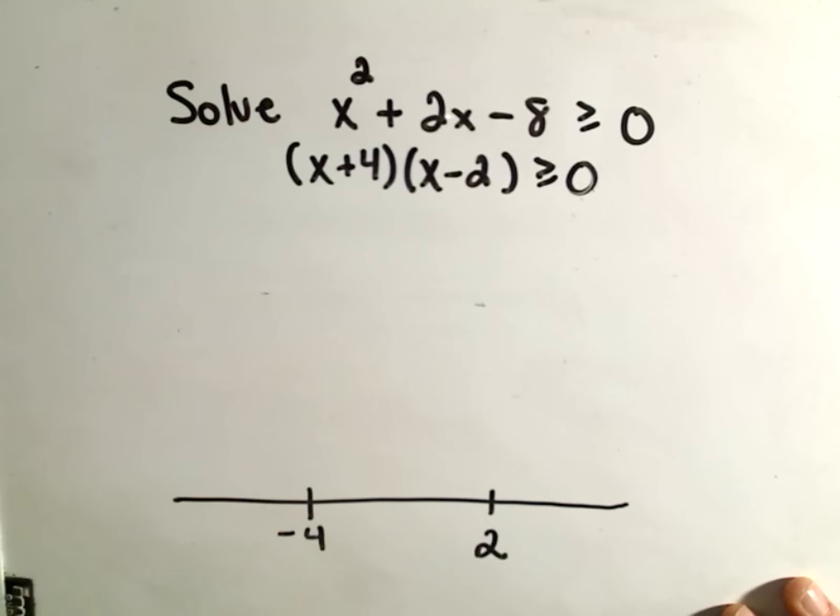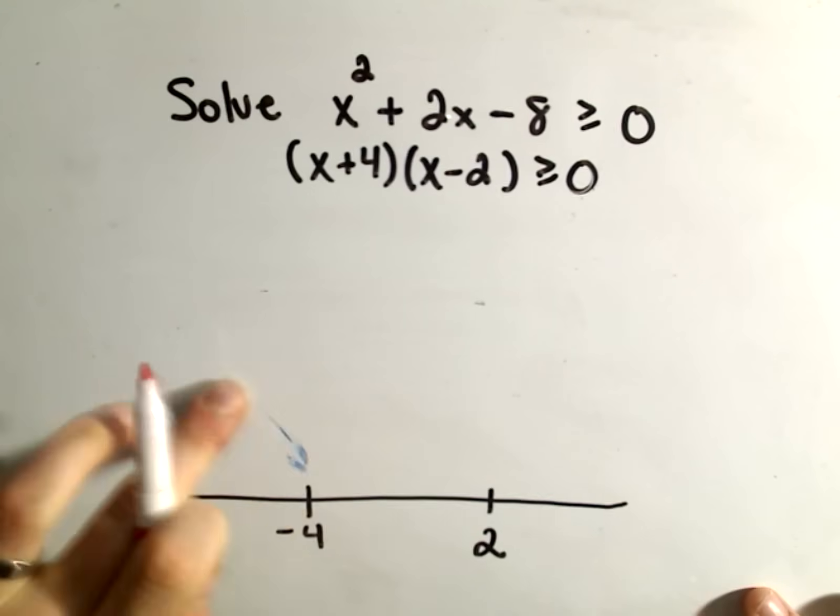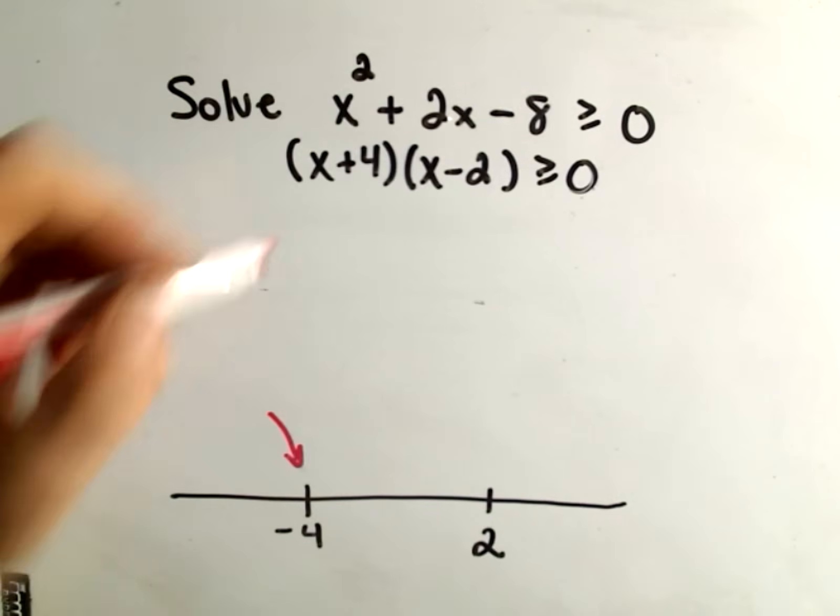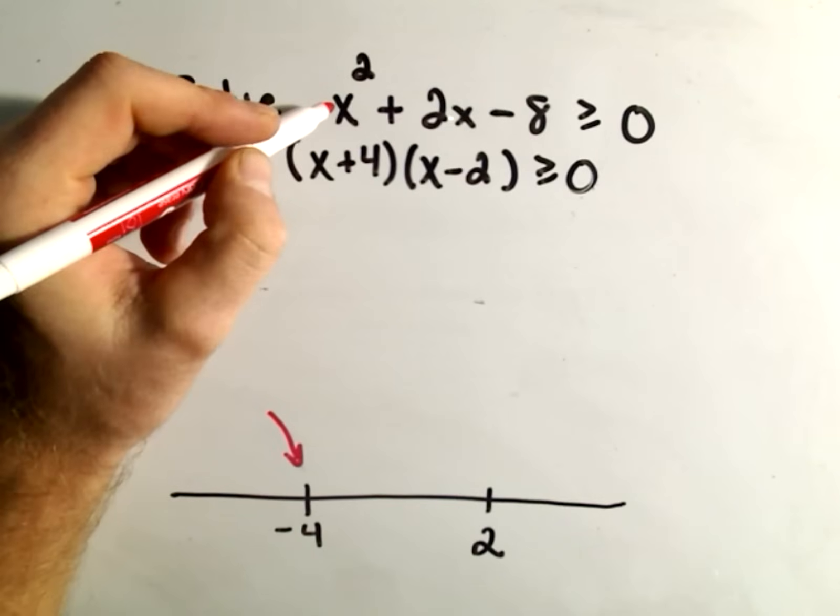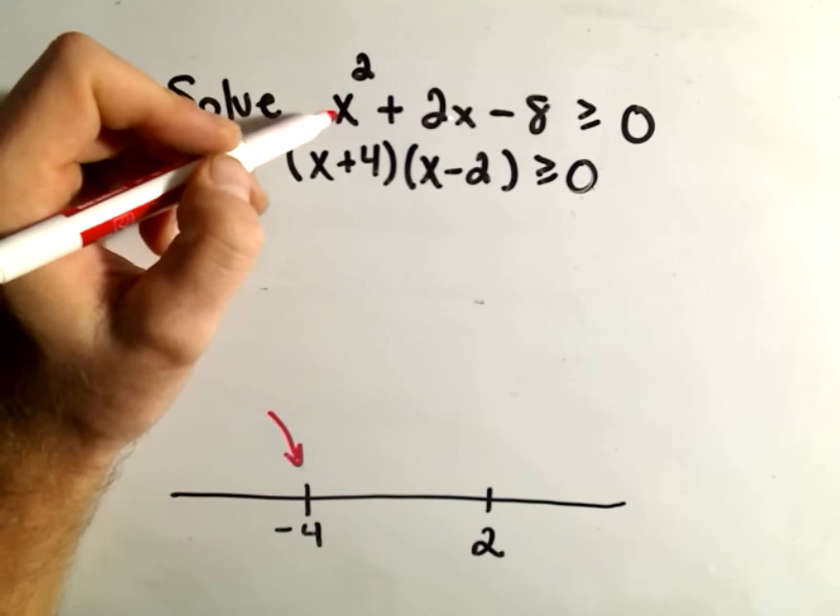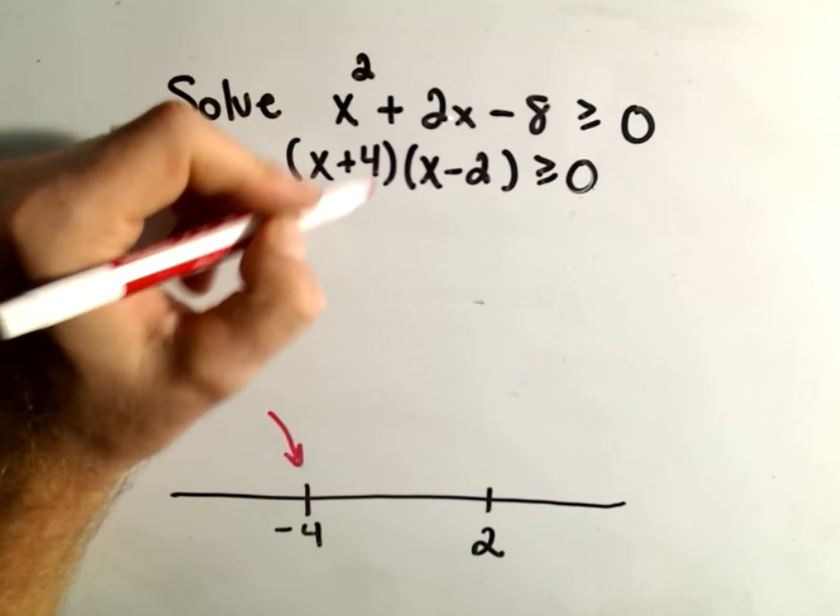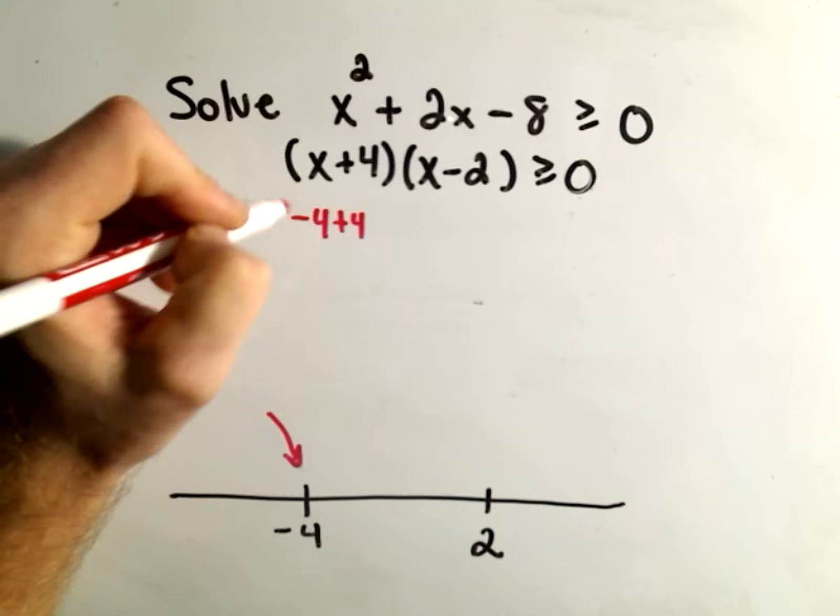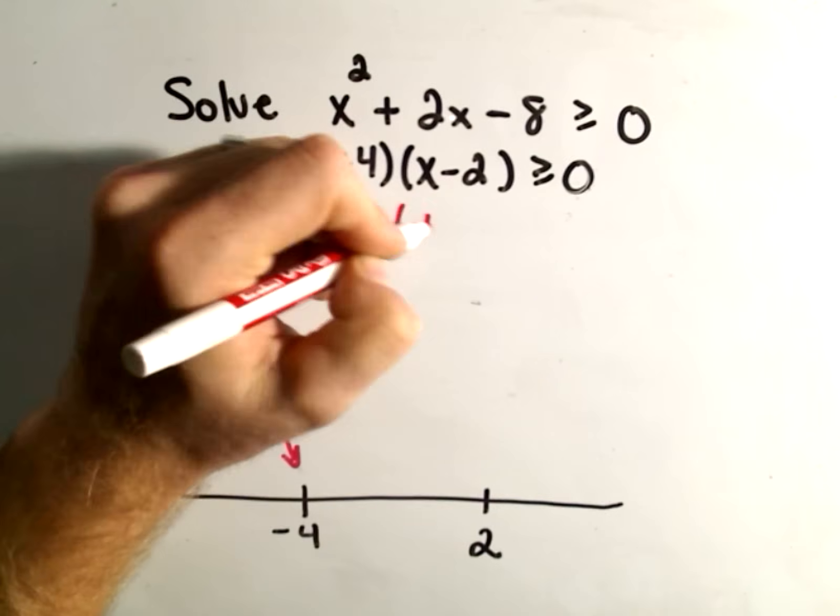Let's do that. So we have to check negative 4. But again, if I check negative 4, let me use a different color. Maybe one that will show up a little better. So we have to check negative 4. But notice if I plug negative 4 into my inequality, it would be equivalent to plugging it into the second line here. So we would get negative 4 plus 4, which is going to be 0.